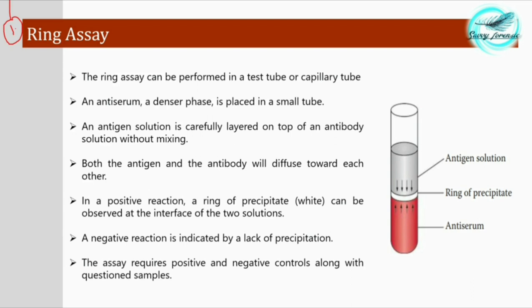The ring assay can be performed in a test tube or a capillary tube. An antiserum is added — it is the denser phase and is placed in the lower portion of the small tube. You can see here that the antiserum is placed in the lower portion of the test tube because it is a dense solution.